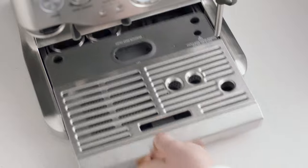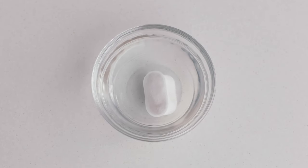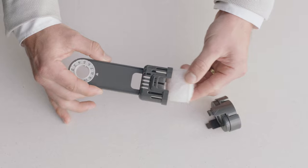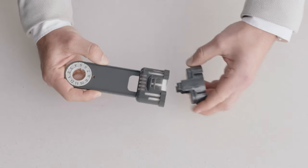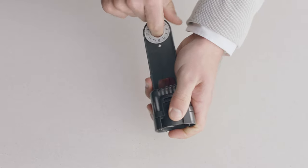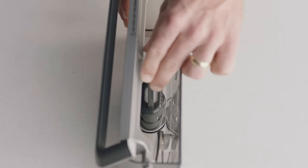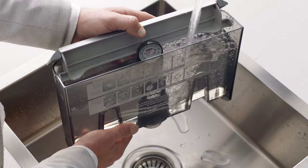Soak the filter in water for five minutes, pop it into the filter holder and set the dial reminder date for two months ahead. Fit the holder snugly into the bottom of the tank and fill with cold water.